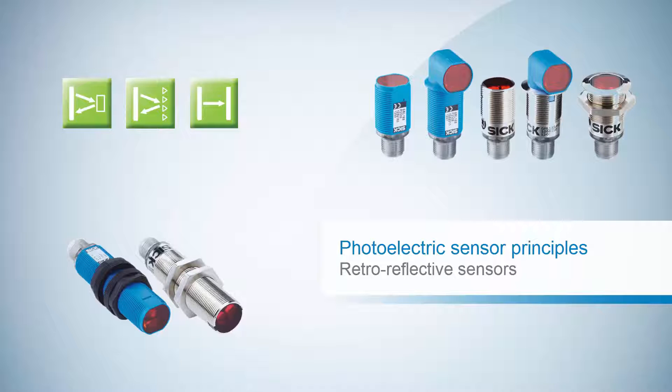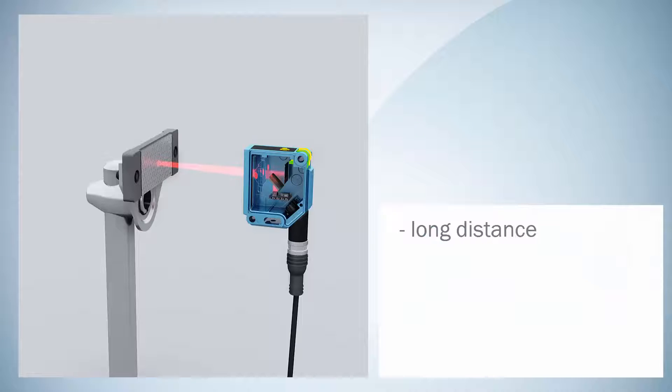This chapter gives a demonstration on the functional principle of retroreflective sensors using a GRL18 as example. In case you need to cover long sensing ranges where proximity sensors have limitations, the retroreflective sensor is a reliable choice.